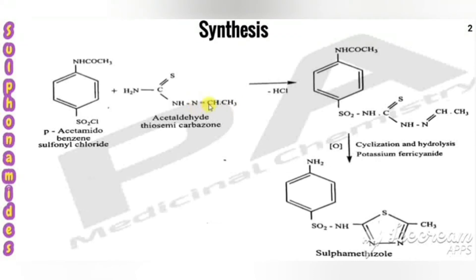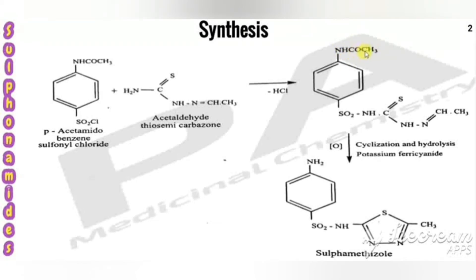Adding thiosemicarbazide with acetaldehyde: the two hydrogens combine with the oxygen from acetaldehyde, removed as water, giving acetaldehyde thiosemicarbazone. Combining these two compounds, the Cl combines with H and is removed as HCl. The remaining group — NH-CS-NH-NH-CH3 — is added with the SO2 group. Then oxidation, cyclization, and hydrolysis are carried out using potassium ferricyanide.